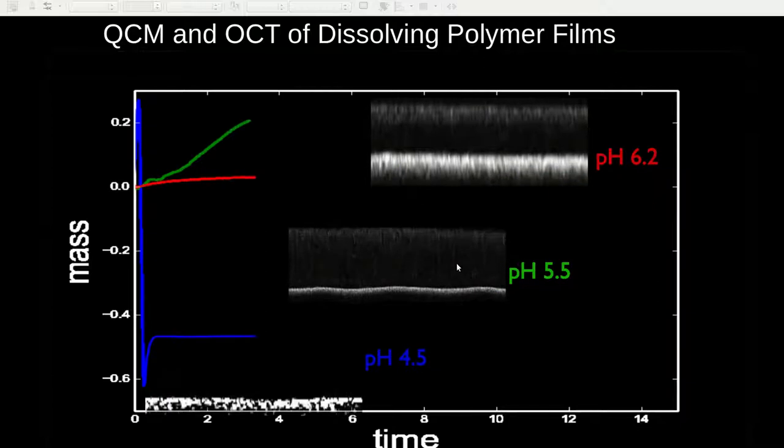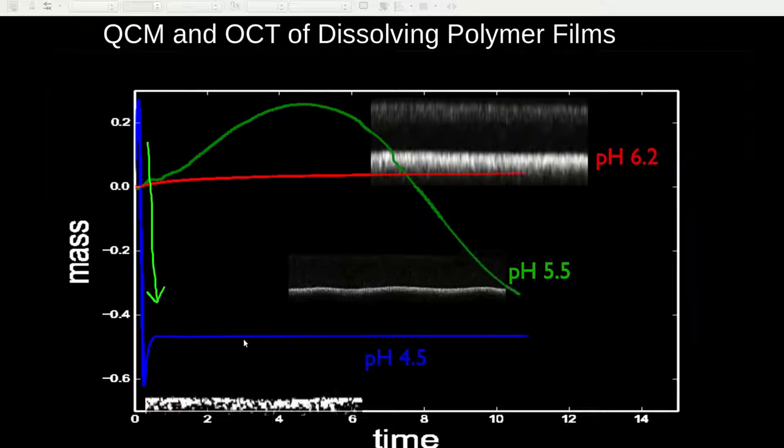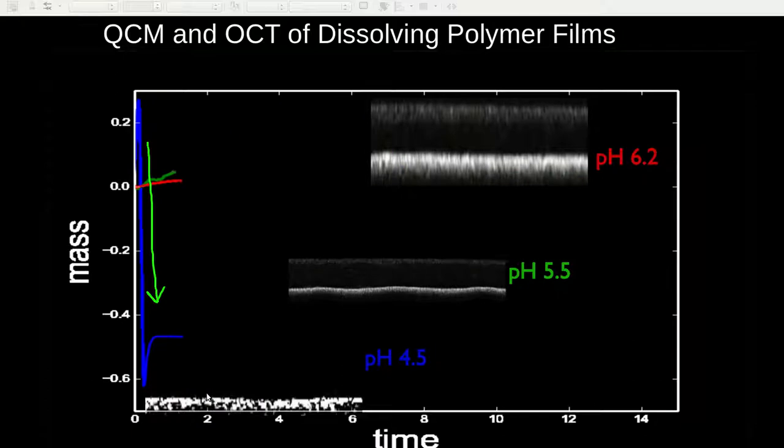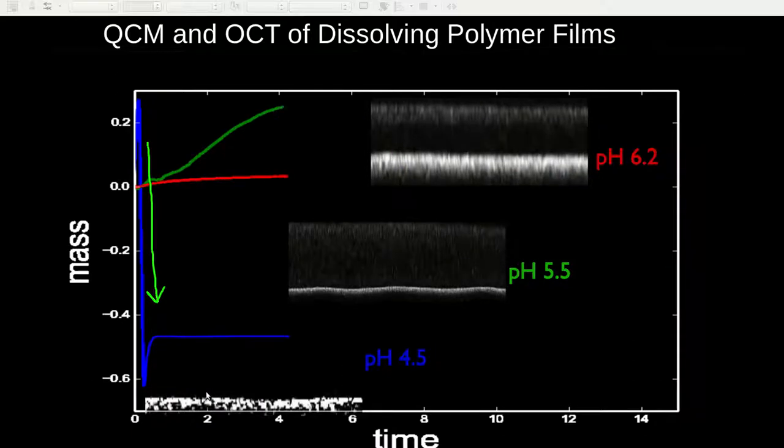Finally, at the lowest pH, we see that there is a very rapid decrease in mass as the polymer dissolves. This can also be seen at the beginning of the video which shows that the polymer film dissolves within the first minute or so of the experiment.